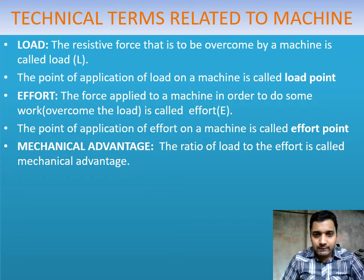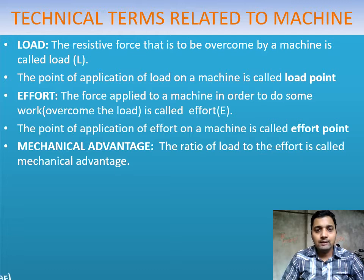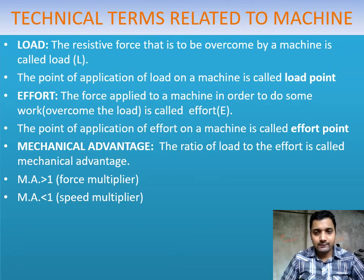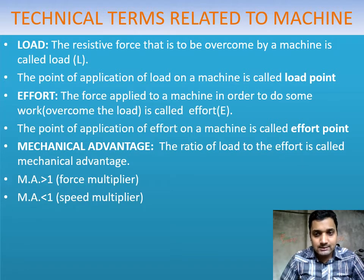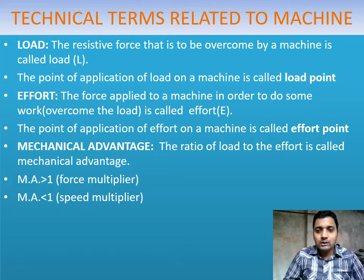The ratio of load to effort is called mechanical advantage, or MA in short. Mechanical advantage has no unit since it is a ratio. By knowing the mechanical advantage, we can tell whether a machine is a speed multiplier, a force multiplier, or used to change direction. If MA — that is load divided by effort — is greater than 1, the load is more and the effort is less, so it is called a force multiplier. If MA is less than 1, it is a speed multiplier. When MA equals 1, it is used to change the direction of force, like a single fixed pulley.